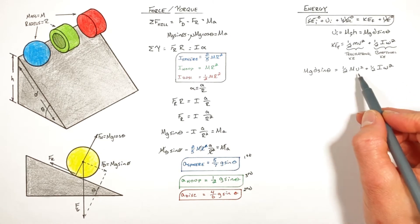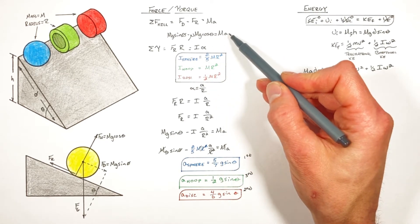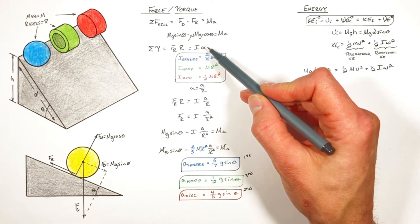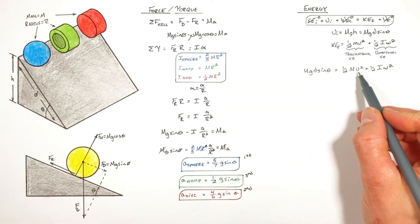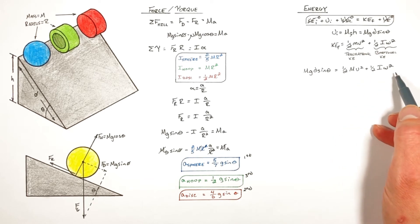But now we have an issue. Much like we ran into having to relate a, the linear acceleration, to alpha, the angular acceleration over here, we now have this v and omega hanging out in our solution and we need to relate them to one another. Now angular velocity omega is given by v, the translational or linear velocity, over r. So subbing this term in right here...